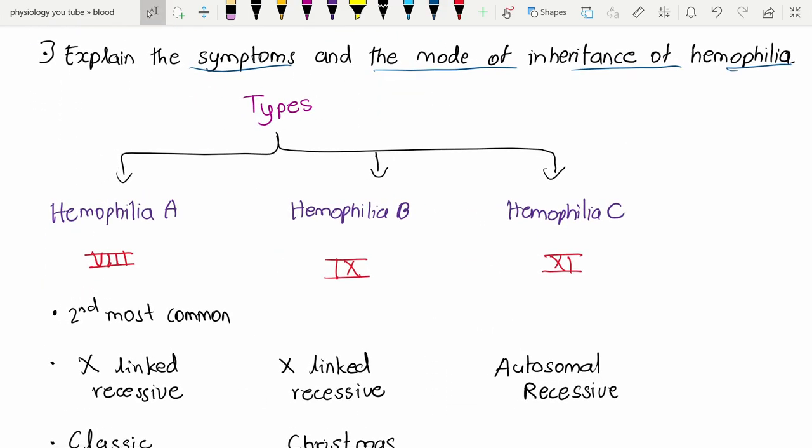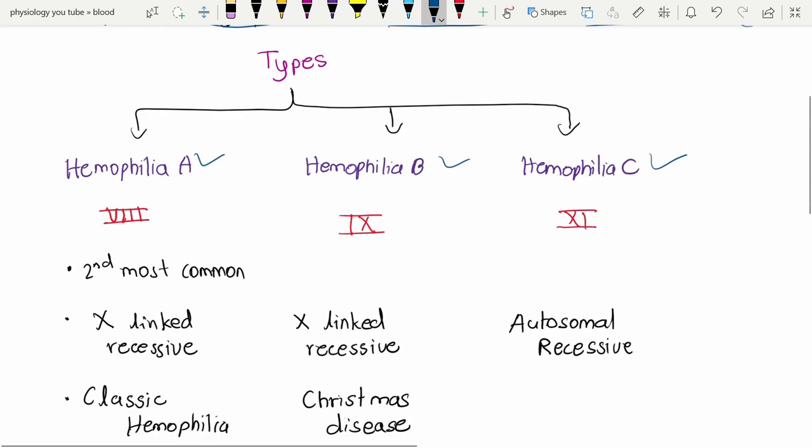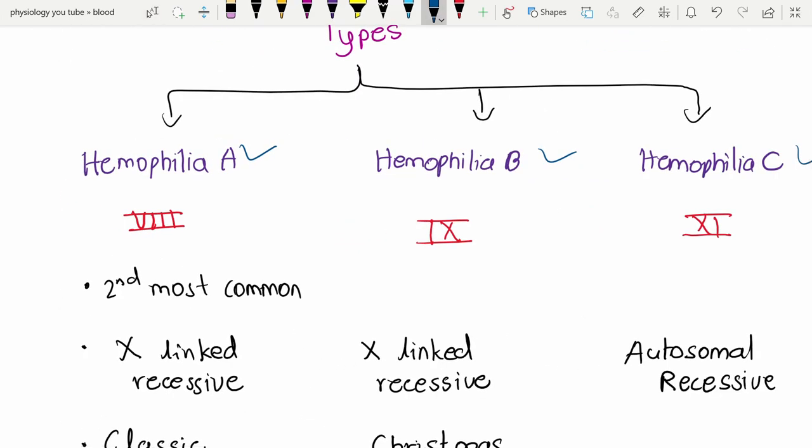There are three types: hemophilia A, hemophilia B, and hemophilia C. In these types, different clotting factors are deficient in the blood. In hemophilia A, there is deficiency of factor VIII, and in hemophilia B, deficiency of factor IX.